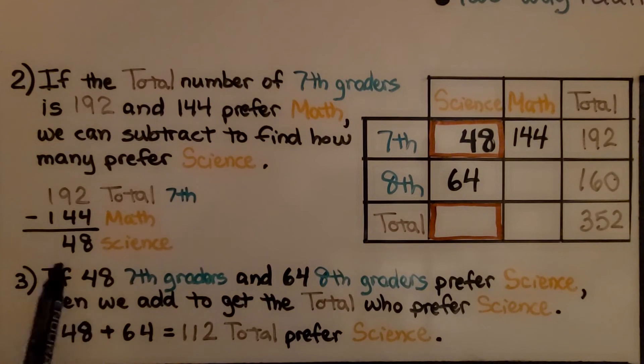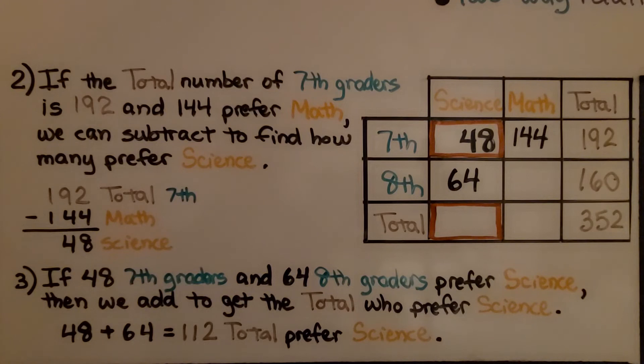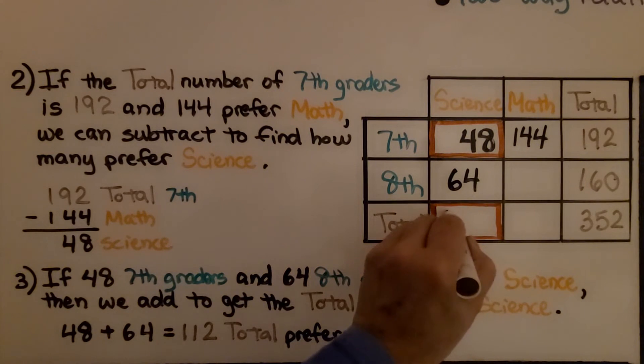Now if 48 7th graders and 64 8th graders prefer science, we can add to get the total who prefer science. 48 plus 64 is equal to 112 total that prefer science.